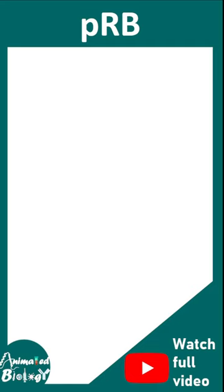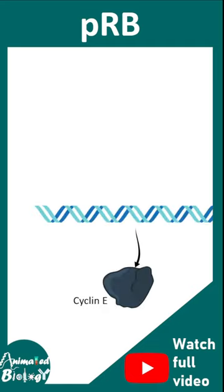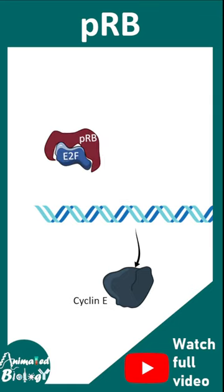For cell cycle progression from G1 to S to happen, cyclin E needs to be generated. E2F transcribes cyclin E, but under normal circumstances when growth factor is not present, E2F is inhibited by PRB.